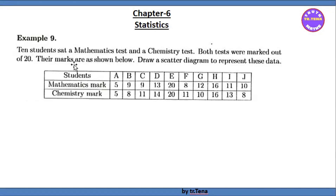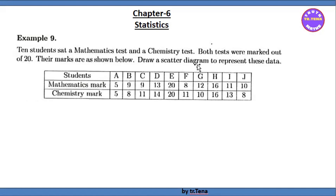If you have a relationship with the student, you can learn mathematics in chemistry and text. You can learn a lot about the text. The student will learn mathematics in chemistry and text. If you have a text, you can see the text out of 20. You can draw a scatter diagram to represent this data.